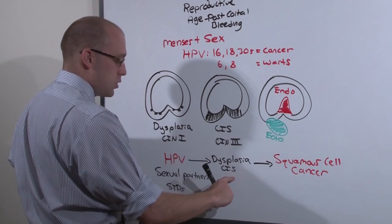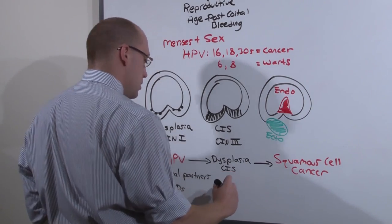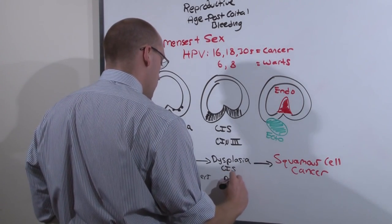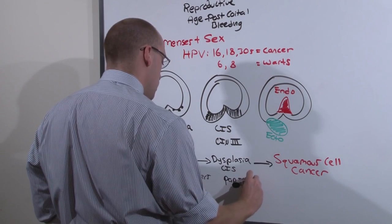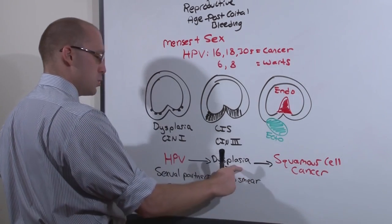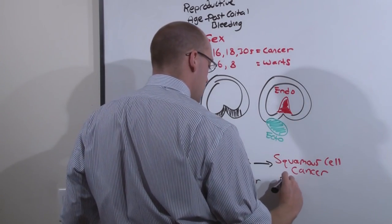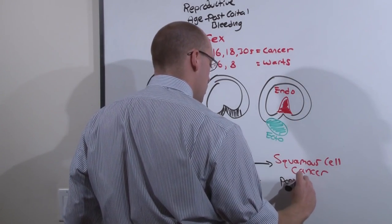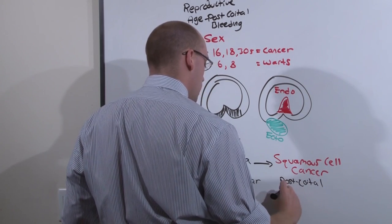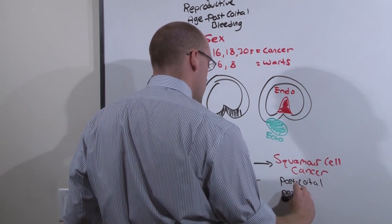At the point of dysplasia or carcinoma in situ, we can catch it with a pap smear. Without the pap smear, there's no way of knowing that she has dysplasia. She won't feel it. Only after she develops full-blown cancer will she begin to experience post-coital bleeding or post-menopausal bleeding.